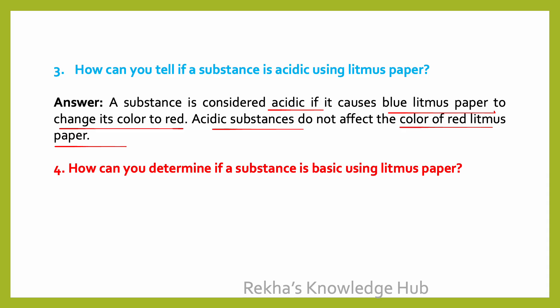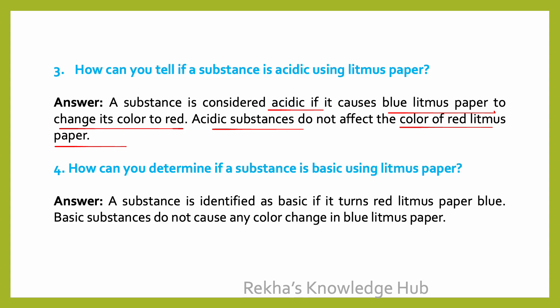How can you determine if a substance is basic using litmus paper? A substance is identified as basic if it turns red litmus paper blue. Basic substances do not cause any color change in blue litmus paper.